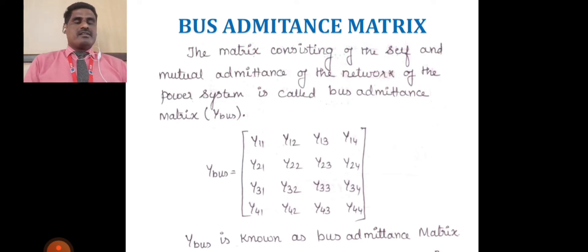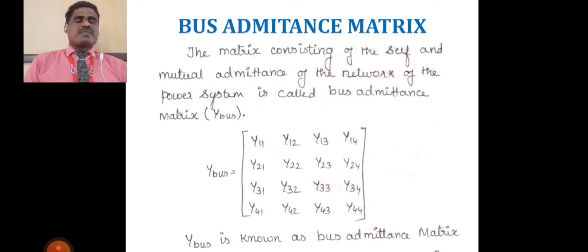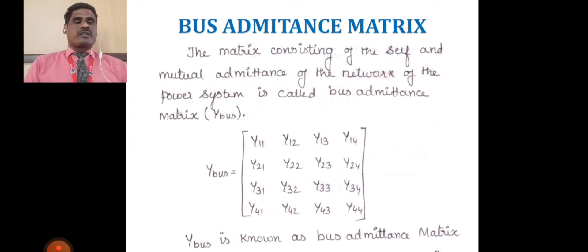What is meant by impedance? Impedance is nothing but r plus jx, where r is resistance and jx is reactance. Any material has some resistance present. x is reactance — if we connect some inductive load or capacitive load, then automatically some reactance is present in the network. So r plus jx is impedance, and the reciprocal of the impedance is called admittance.